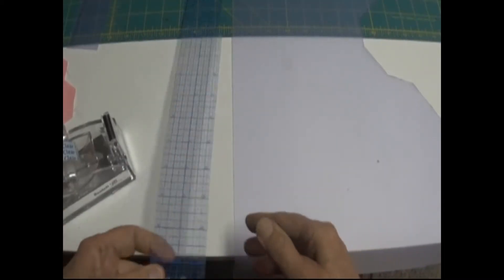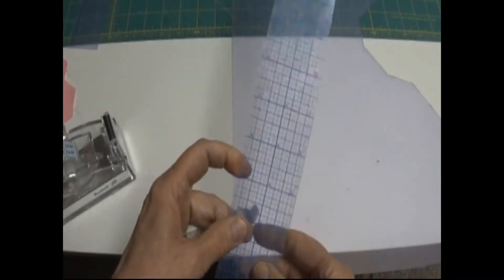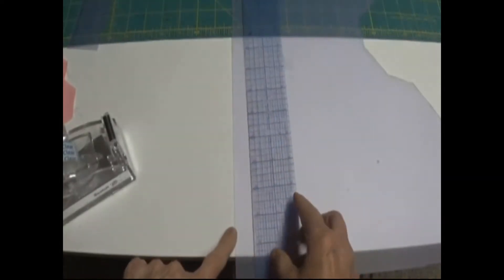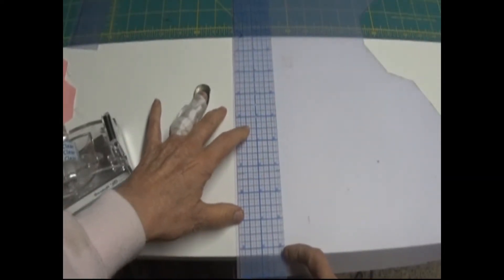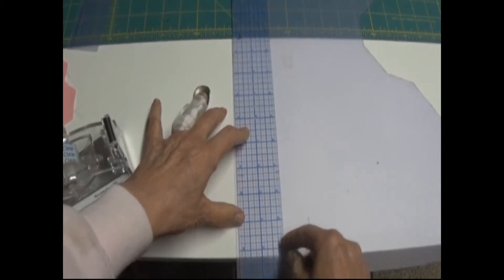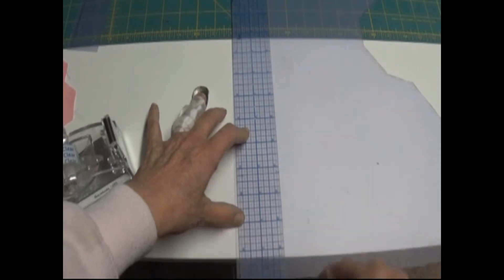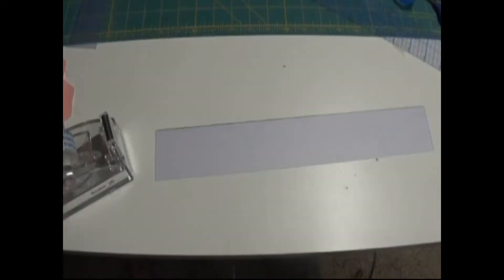This is a piece of template plastic, and this is my handy dandy little plastic 2 inch ruler. Excuse my broken finger. I'm going to draw a line on this plastic that's 2 inches wide. And then I'm going to cut it. There I have my 2 inch wide piece of template plastic.